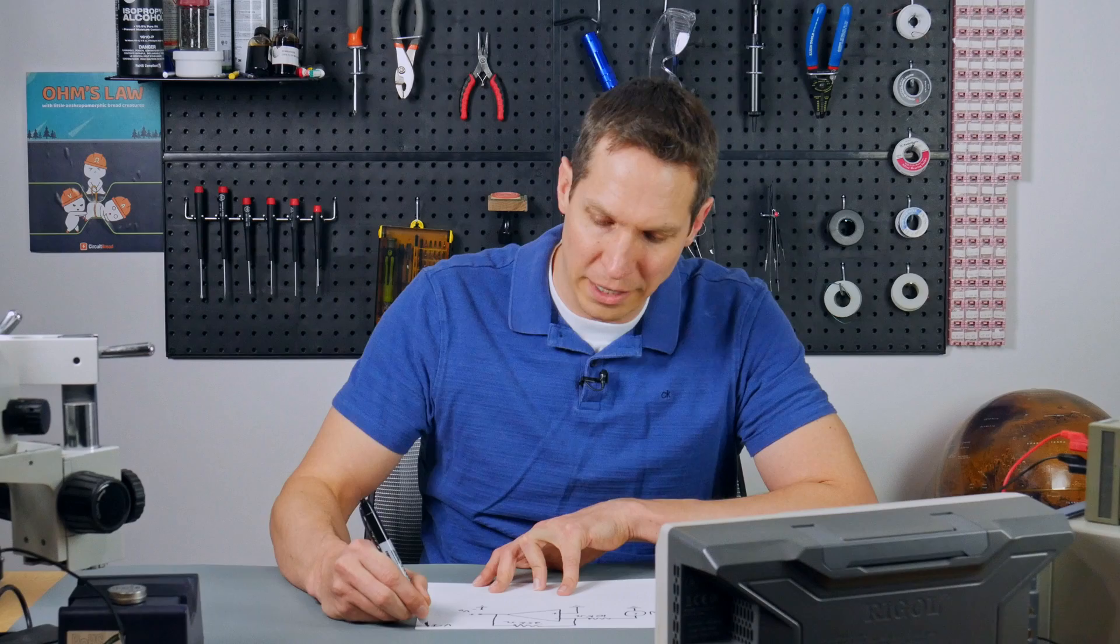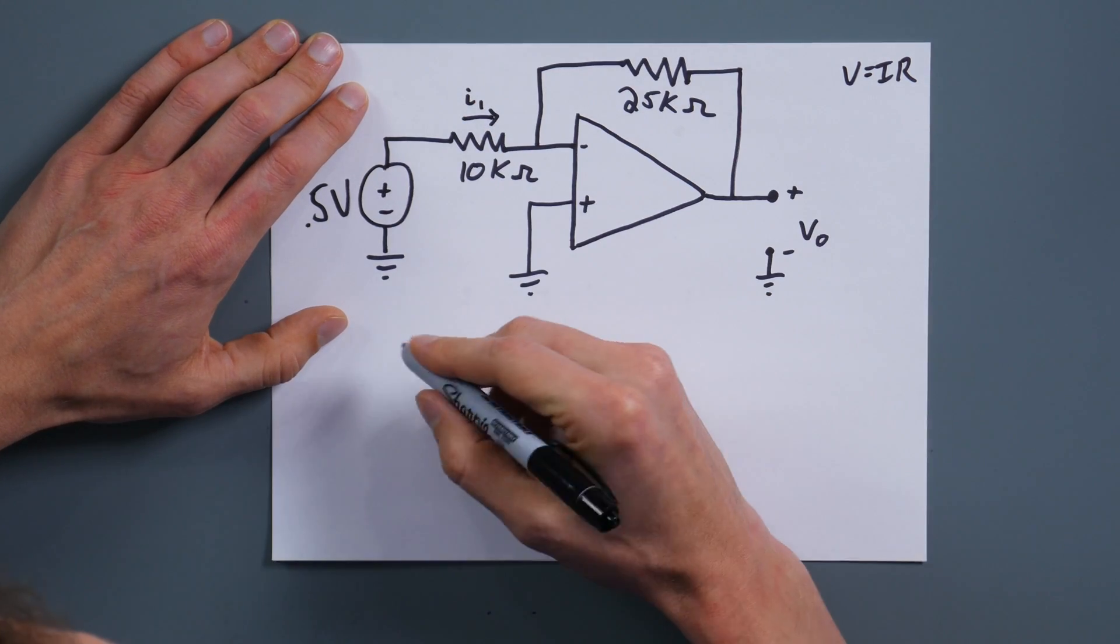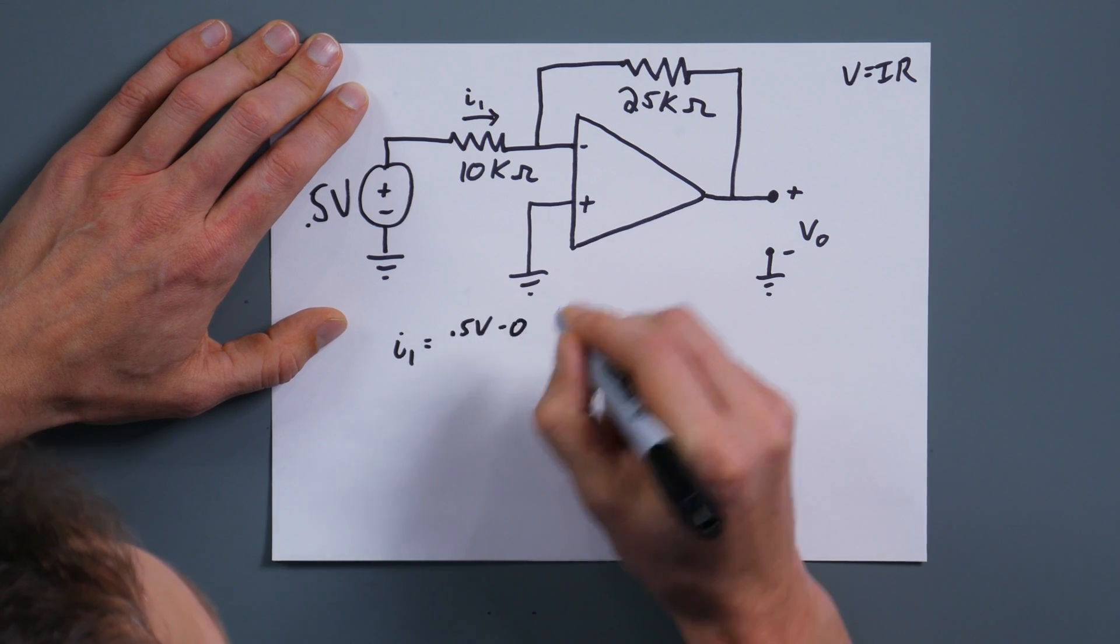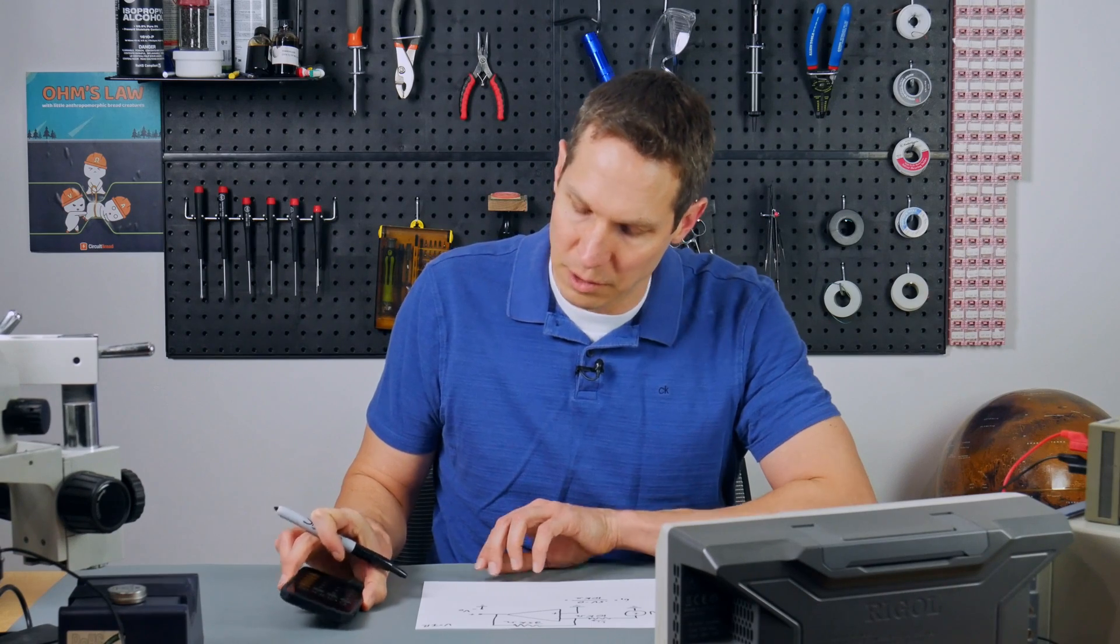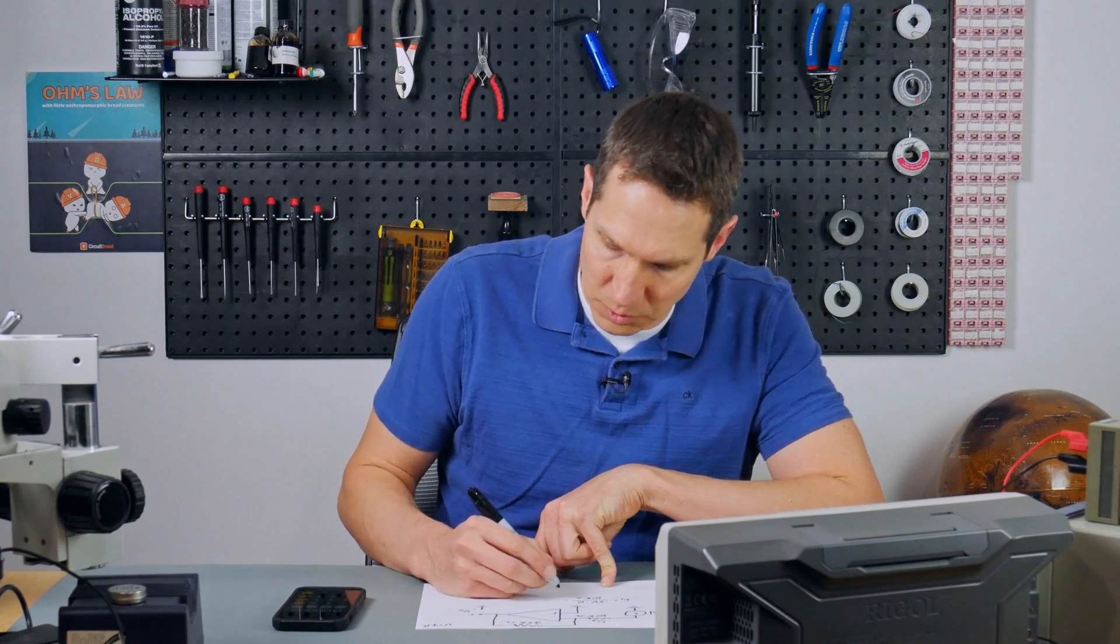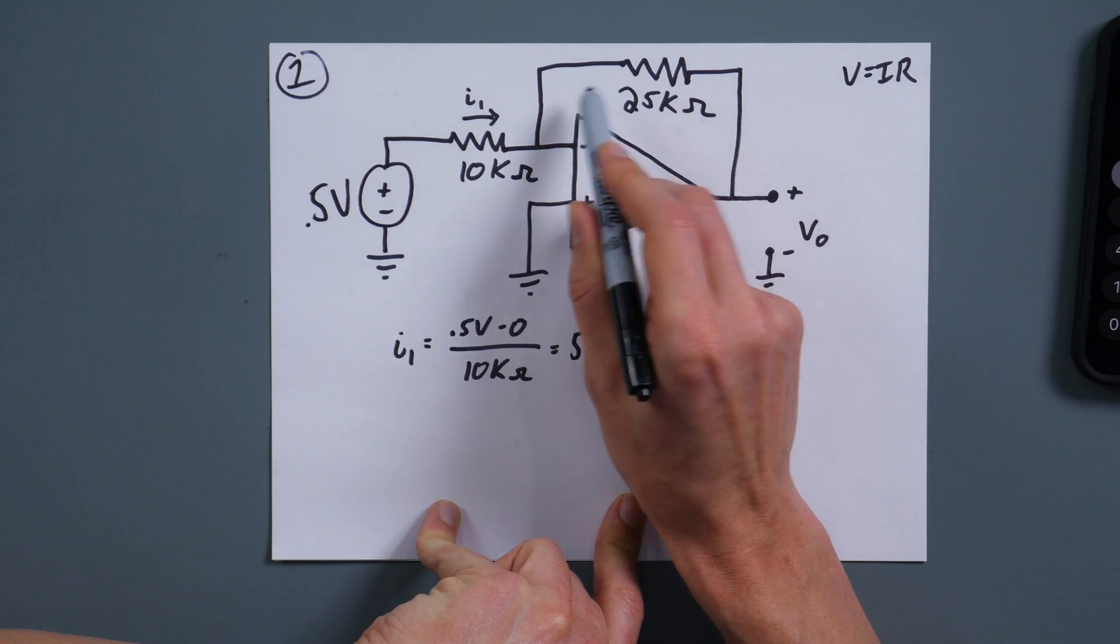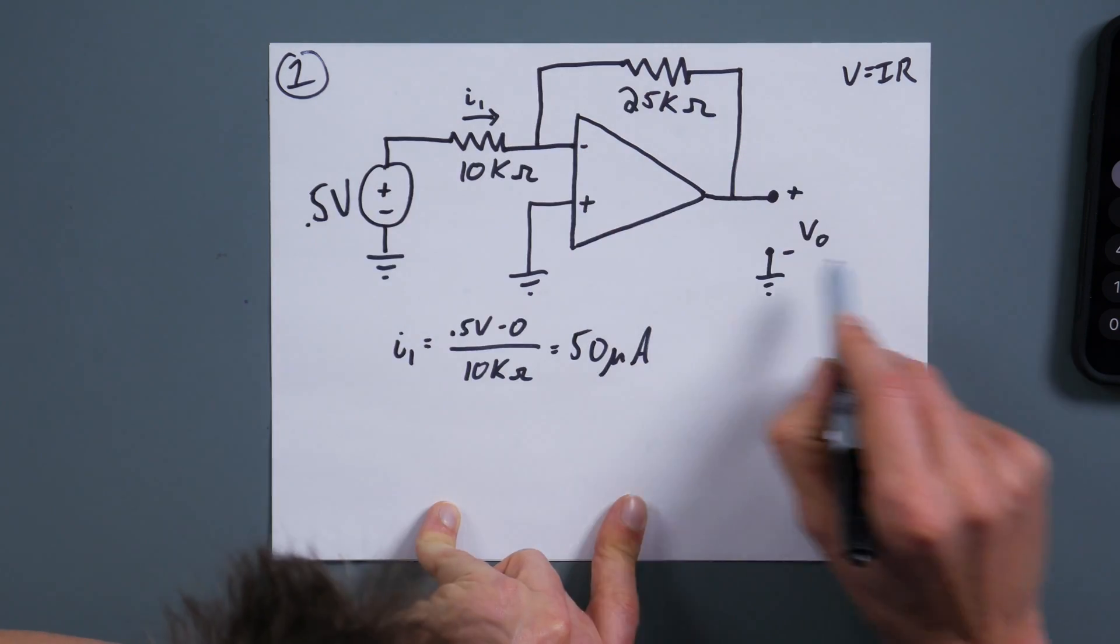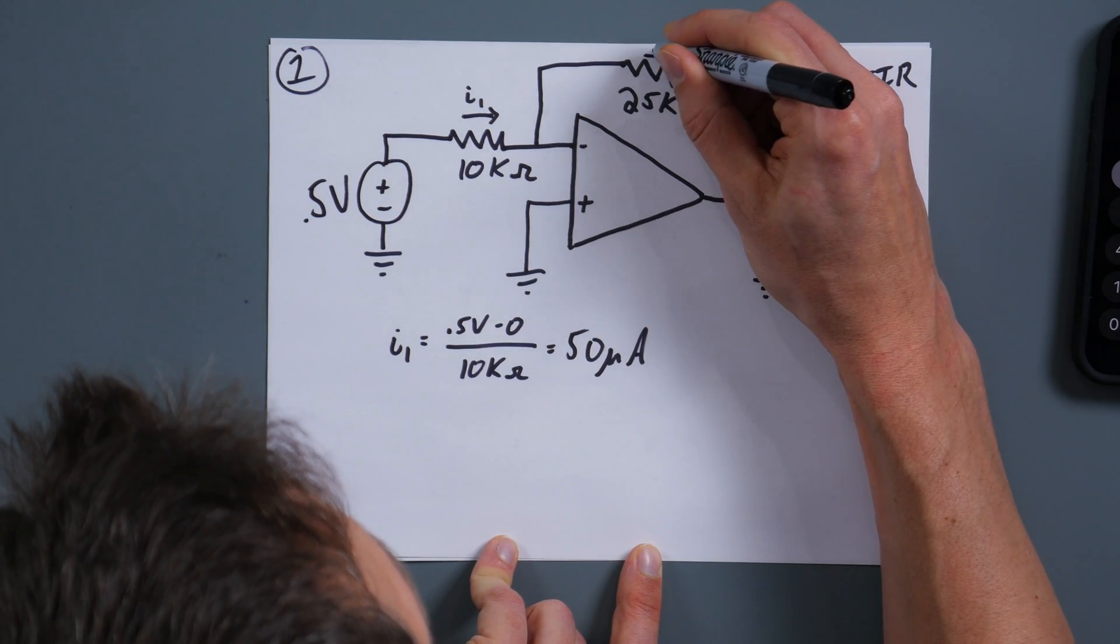As always, I like to put Ohm's law here in the corner. So let's find, we'll just call this I1. And so I1 is just going to be 0.5 volts minus zero volts over 10 kilo-ohms. We can see that this is about 50 microamps, or 0.05 milliamps. So get 50 microamps as the current through there. Now we know the current through there because that 50 microamps isn't going through here. It is going all the way through. So now we have our current going this way. This is still I1.